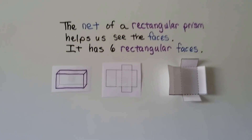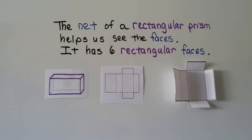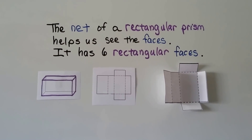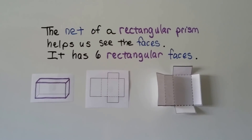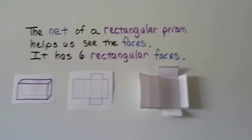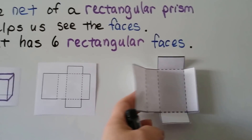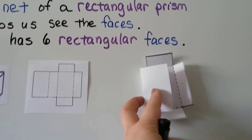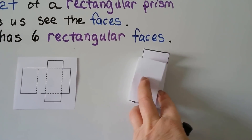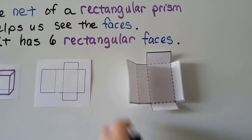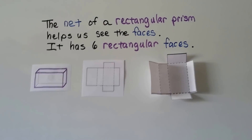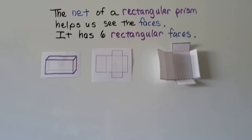The net of a rectangular prism helps us see the faces. It has six rectangular faces. It would look like this when it's flat, and we can fold it on the dotted lines and actually make a 3D rectangular prism by taping it together. You can see all the faces.